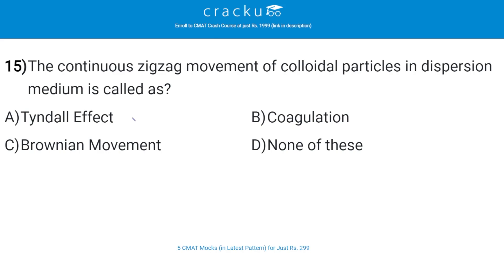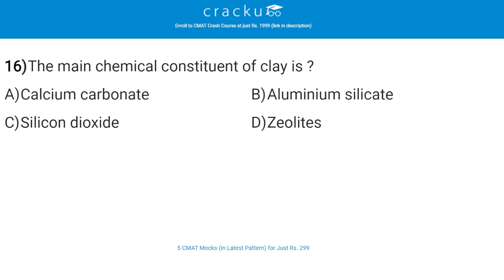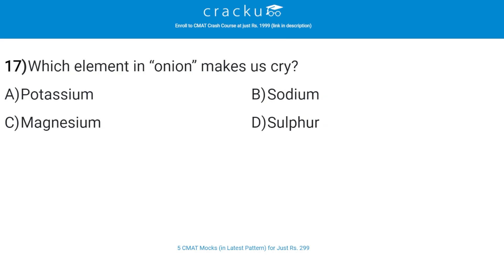The correct answer is C — Brownian movement. The next question: what is the main chemical constituent of clay? The correct answer is B — aluminium silicate.